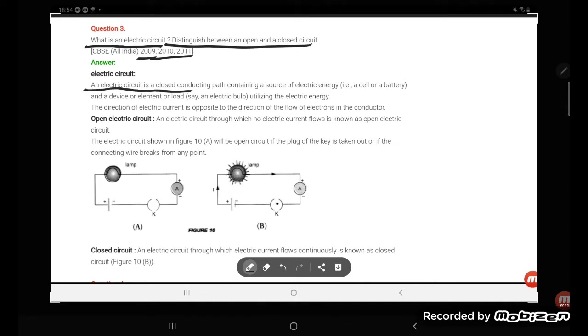An electric circuit is a closed conducting path containing a source of electric energy—a cell or battery—and a device of elements or loads, say an electric bulb, utilizing the electric energy.